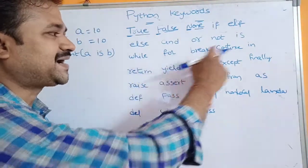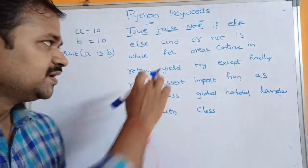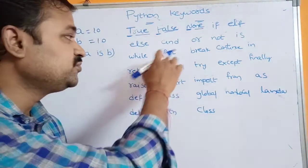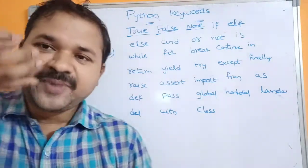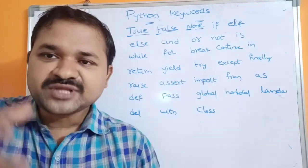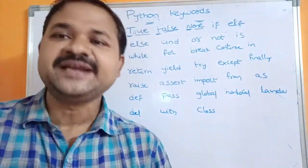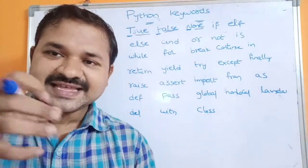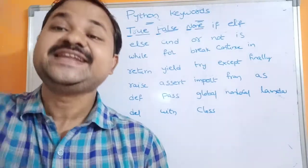The next keywords are while, for, break, and continue. While is a looping control statement used to execute a set of statements repeatedly. For is also a looping control statement used to execute a set of statements repeatedly. Break and continue are used within looping statements. When break is executed, the loop terminates and control moves to the statements following the loop. When continue is executed, the remaining statements in that iteration are skipped, but the loop continues with the next iteration.